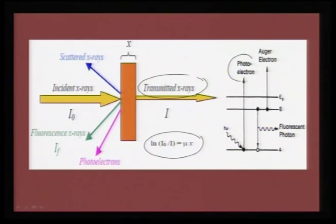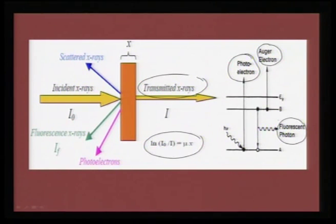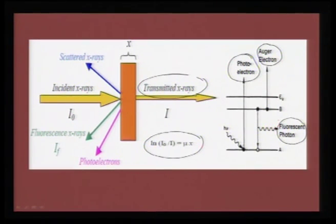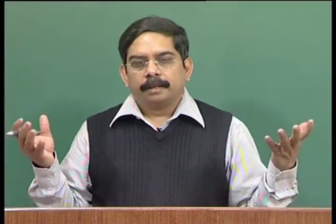When X-rays are absorbed by the sample, they can either come out as a photoelectron or as an Auger electron, and then a fluorescent photon. From the way we harvest the secondary processes that happen due to the interaction between the material and the incident X-rays, we can categorize different sorts of spectroscopies.